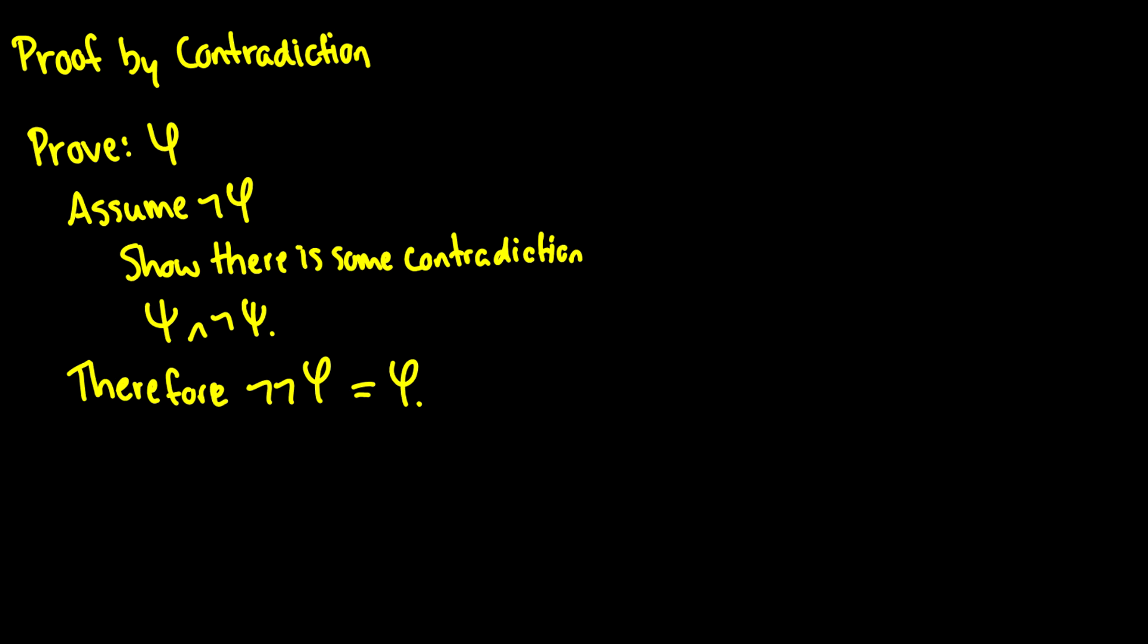Here's the general layout for a proof by contradiction. Say we want to prove some statement φ. We assume ¬φ, and then we have to show that there is some contradiction eventually that says ψ and ¬ψ. If this happens, we say that our assumption would be false, which would give us ¬¬φ, and we know this is equal to φ, therefore we have proven the statement.